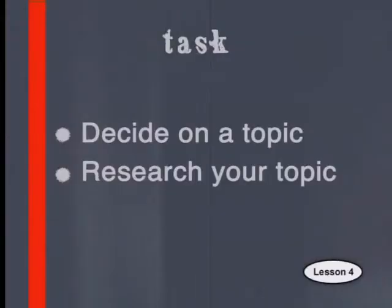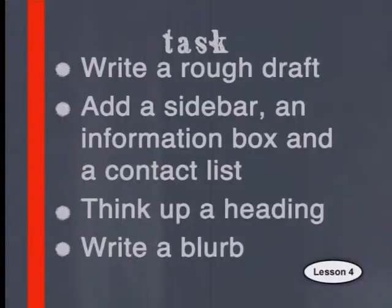Today you are going to do another task towards creating your own magazine. For this task you will work on your own and not in your group. Keep in mind the type of magazine you have begun to design and think of an article you can write for it. Decide on a topic for your feature article, then begin your research. Think of how you want to begin writing — for example, if your magazine is a health magazine and you want to write about the effects of TB in your community, decide whether to write about one specific family or the entire community. Once you've decided how to approach the article, write a rough draft. Also add a sidebar, an information box, and a contact list. Finally, think up a heading and write a blurb.